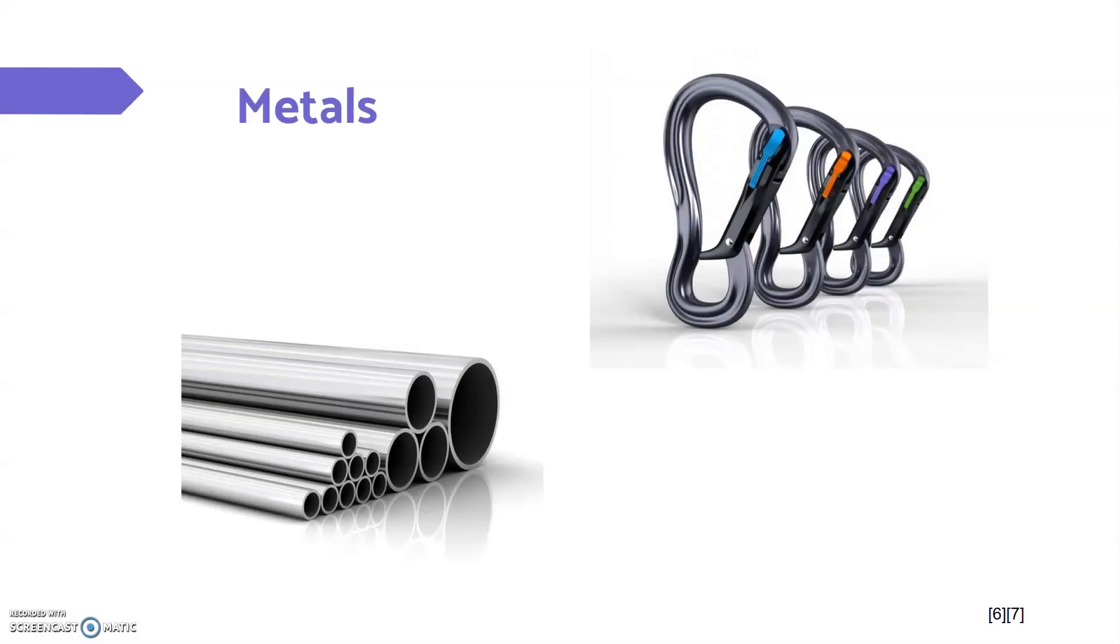Metals comes from the Greek word metallon which means quarry or metal. It is a material that is typically hard, opaque, shiny, good at conducting electricity and thermal conductivity. Metals are generally malleable, so if you hit them they bend.